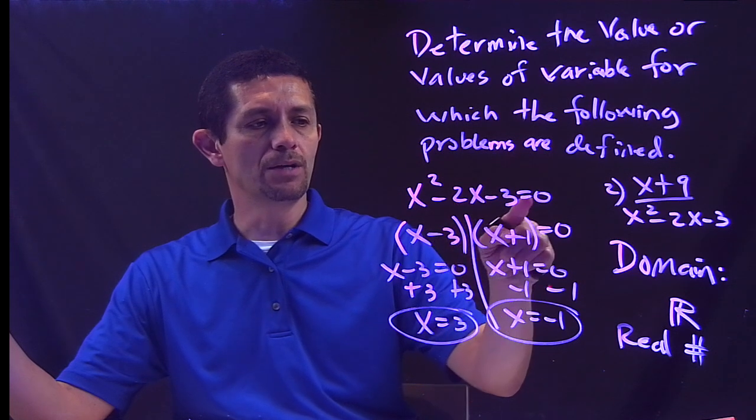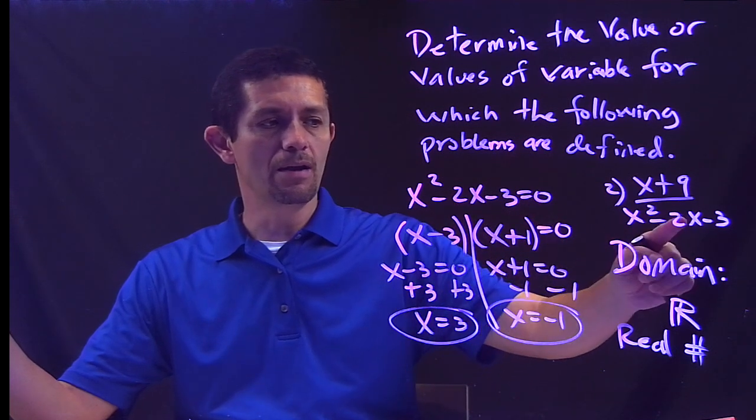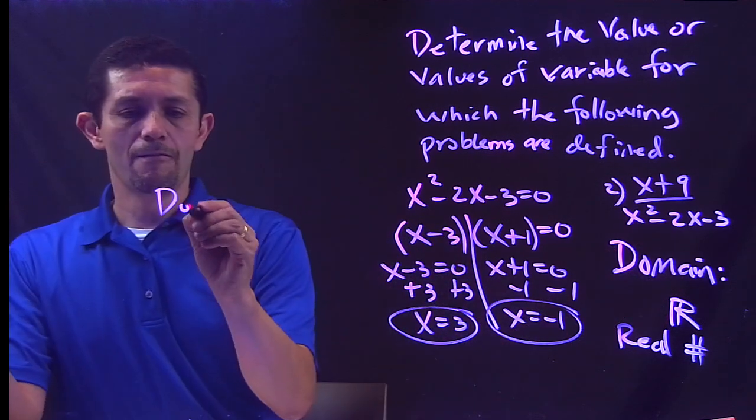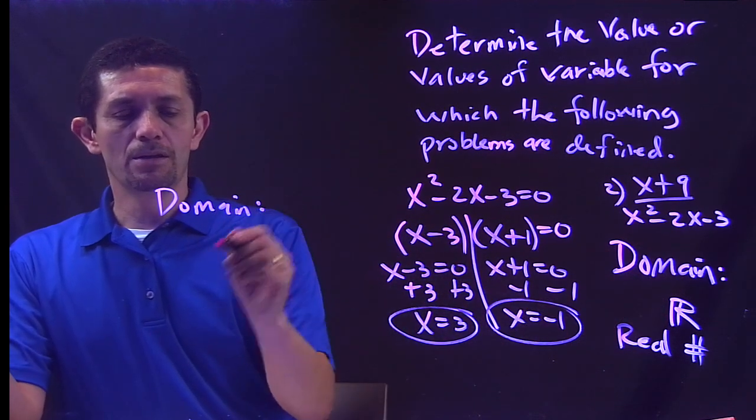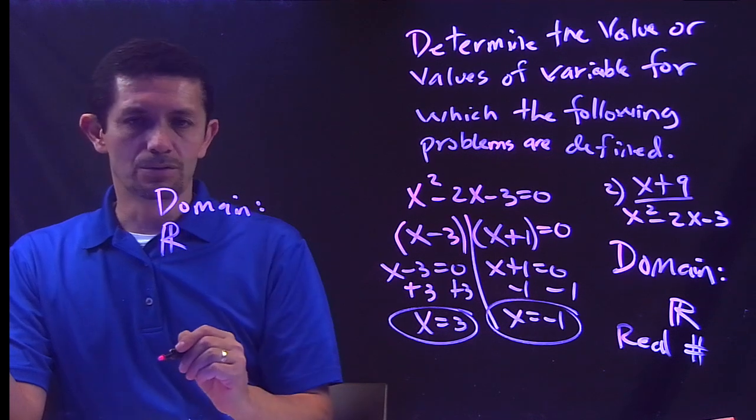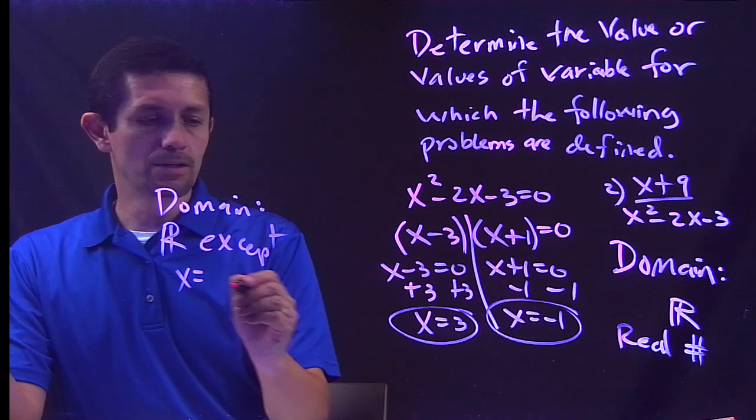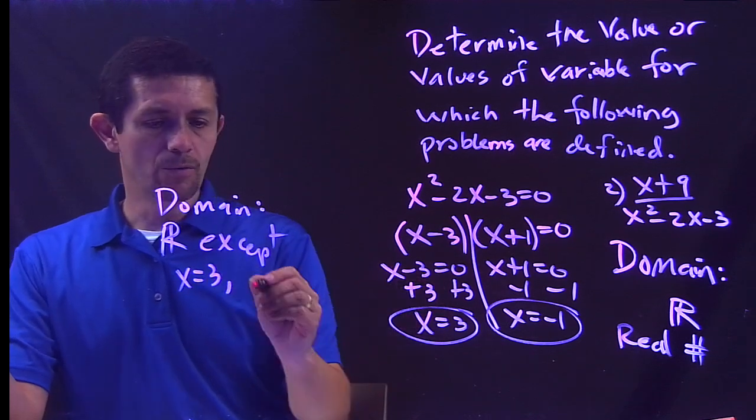So do I want these two values? No, because these two values will make my denominator equal to 0, and I don't want my denominator to be equal to 0. Therefore let me write my domain. So my domain is all real numbers.